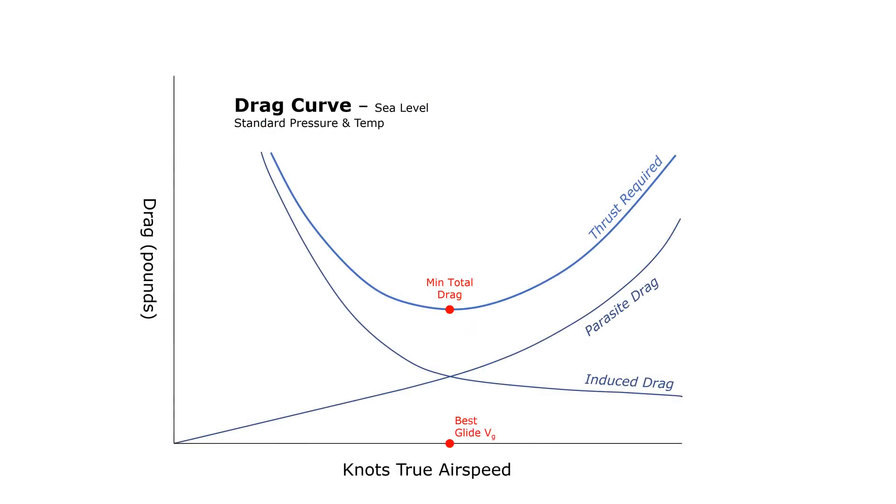Excess thrust is anything left over after the required thrust. We all know that our aircraft will produce maximum thrust at full power, so we might think that our total thrust or thrust available curve would be a straight line, with airspeed having no effect, and so our excess thrust would be shown by this line.